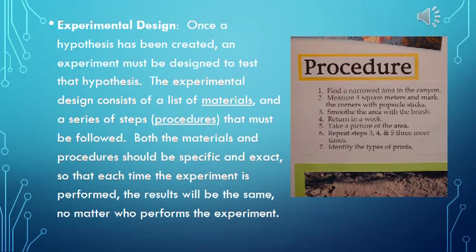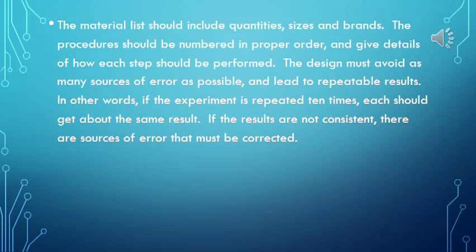Once a hypothesis has been created, an experiment must be designed to test it. The experimental design consists of a list of materials and a series of steps, or procedures, that must be followed. Both the materials and procedures should be specific and exact so that each time the experiment is performed, the results will be the same no matter who performs it. The material list should include quantities, sizes, and brands. Procedures should be numbered in proper order with details of how each step should be performed. The design must avoid as many sources of error as possible and lead to repeatable results — if results are not consistent, there are sources of error that must be corrected.